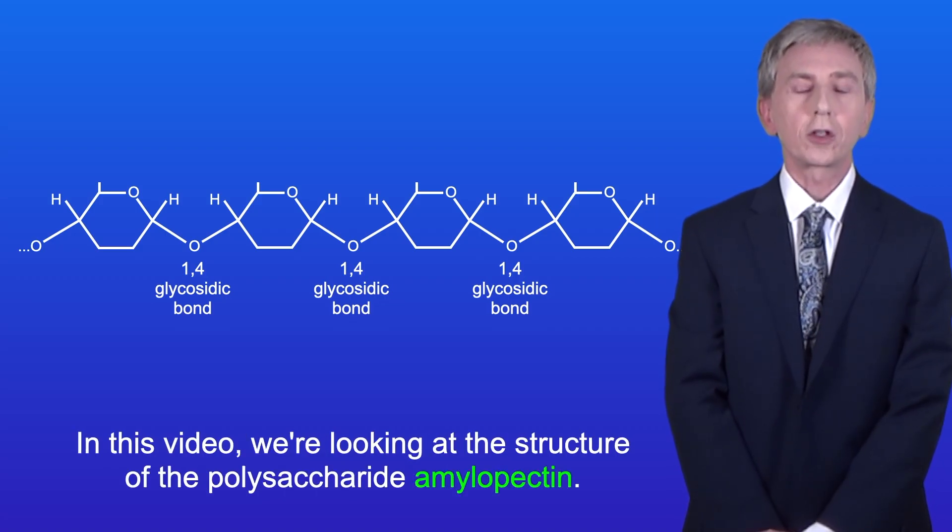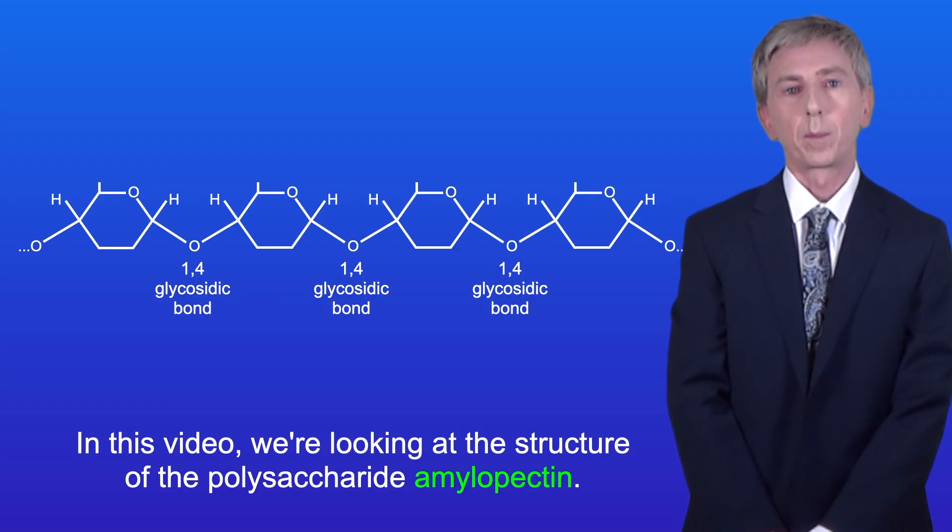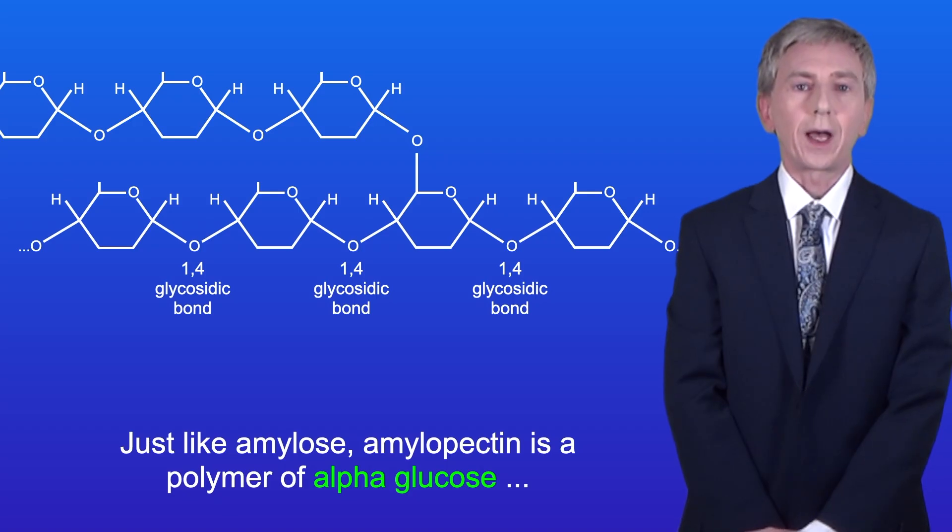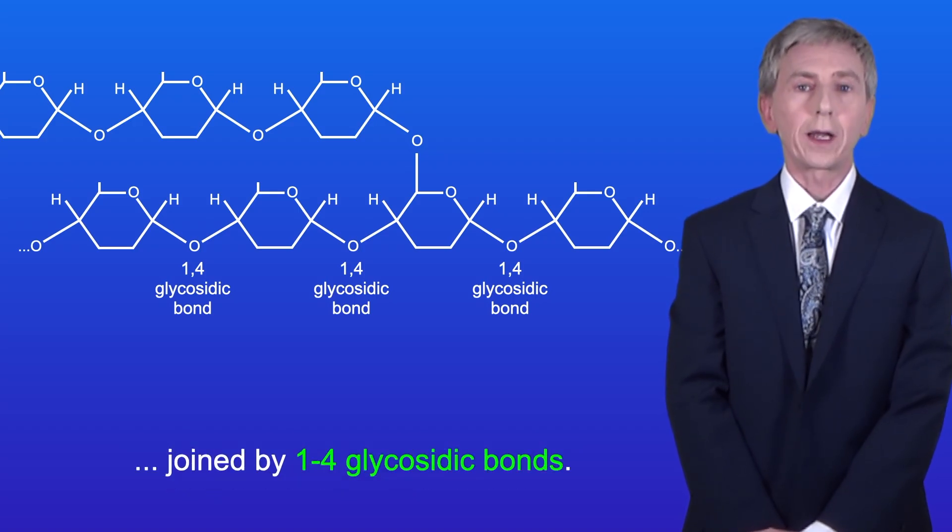Now in this video we're looking at the structure of the polysaccharide amylopectin. I'm showing you the structure of a small section of amylopectin here. Just like amylose, amylopectin is a polymer of alpha glucose joined by 1,4 glycosidic bonds.